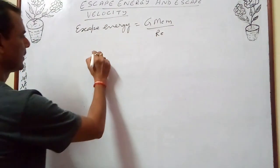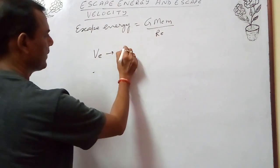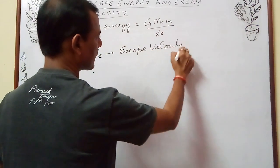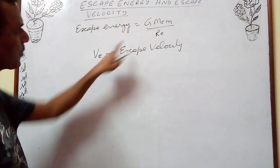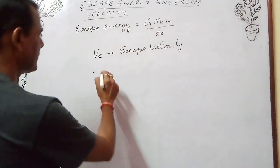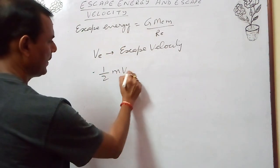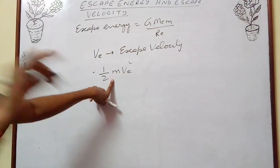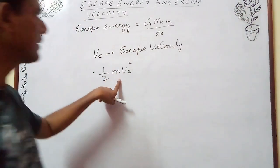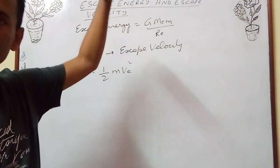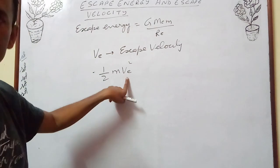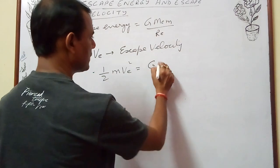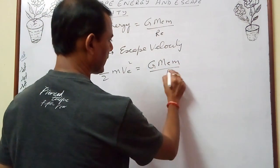If Ve is the escape velocity, then the kinetic energy must be equal to the escape energy: ½·m·Ve² equals the energy given to the object on the surface of earth. If this kinetic energy equals the escape energy, the object will escape to infinity. Therefore this velocity is called escape velocity, and we set ½·m·Ve² equal to G·Me·m/Re.